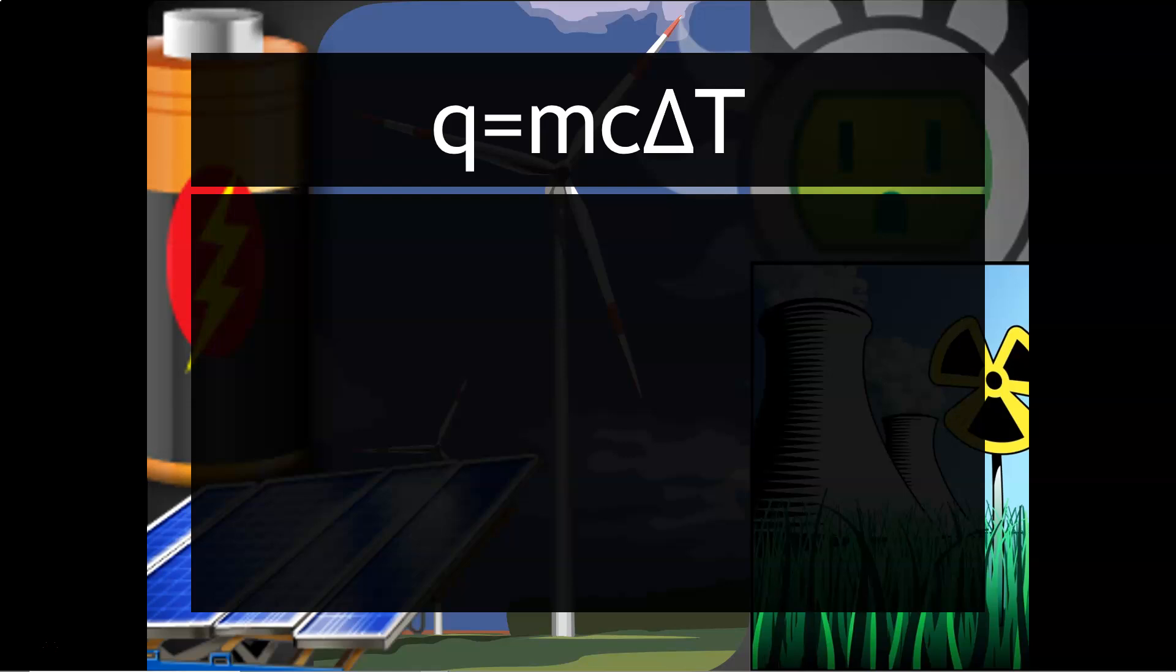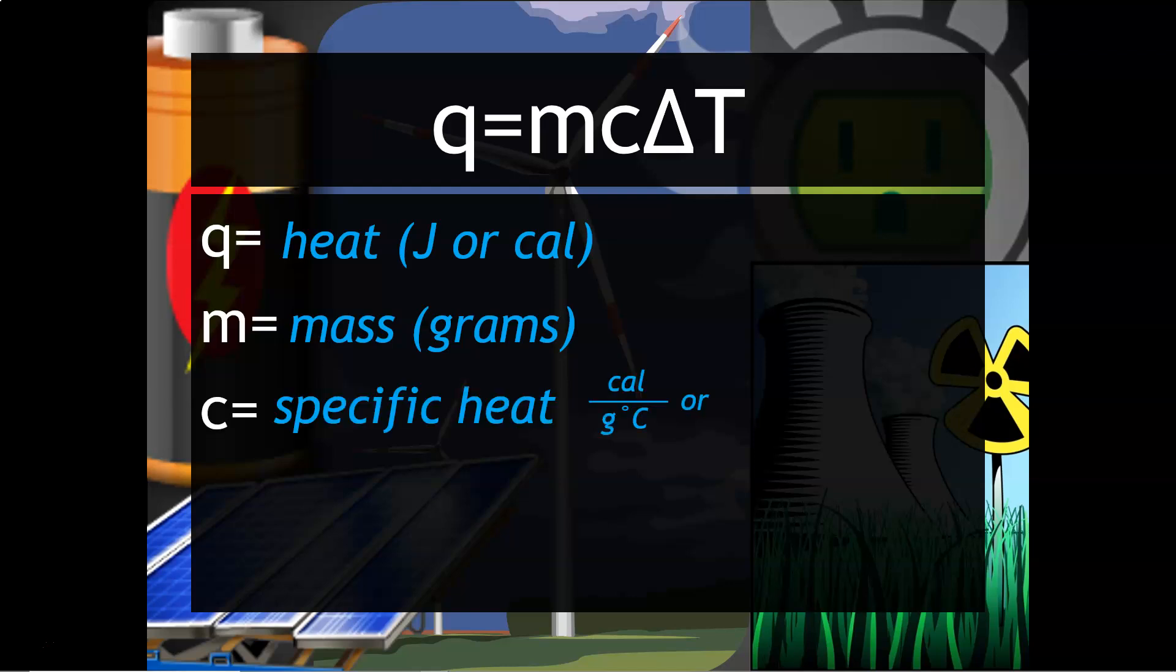This is the formula that you will use in order to analyze heat changes. Q stands for heat - the units are joules or calories. M is mass in grams. C is the specific heat which you saw in the last slide.